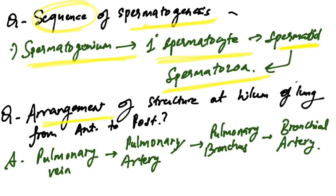The arrangement of structures at the hilum of the lung from anterior to posterior: Pulmonary vein, pulmonary artery, pulmonary bronchus, and bronchial artery.